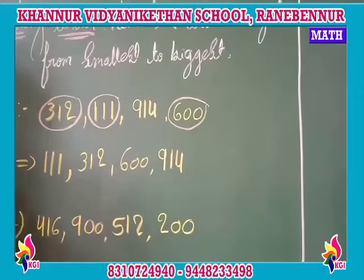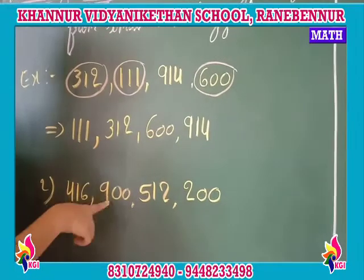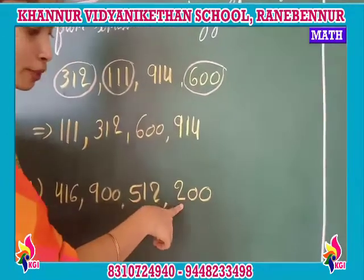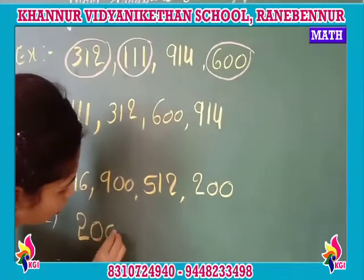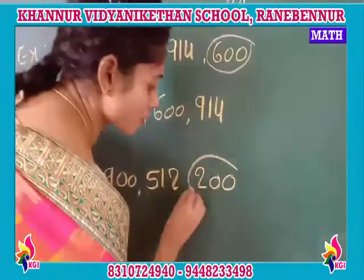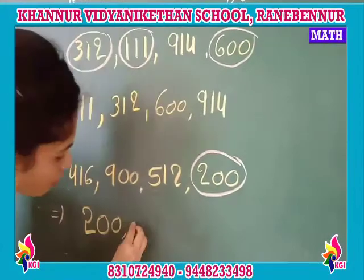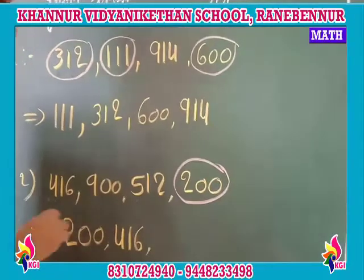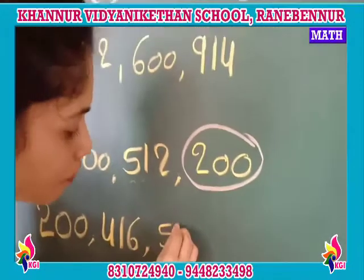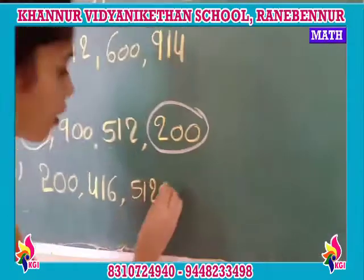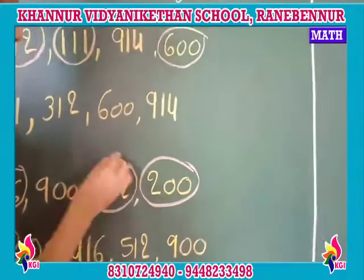Which number comes first here? We have to consider the hundreds place. In the hundreds place: 4 is there, 9 is there, 5 is there, 2 is there. Which is the smallest? 200. First we write 200. After 200, comparing 4, 5, 9 — the next is 416. After 416 comes 512, and then last is 900. We arrange in the form of smallest to the biggest.